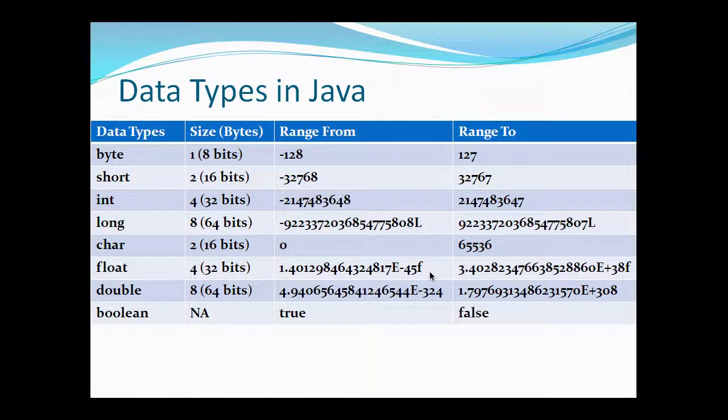If you see, they range from very high precision, from 10 to the power minus 45 to 10 to the power 38 in decimal. If you want to use floating point values like decimal values, then you have to use float and double data types.